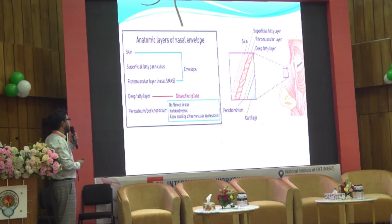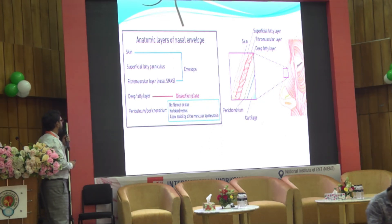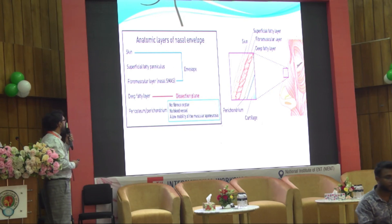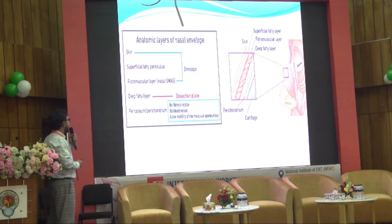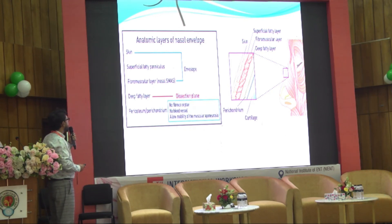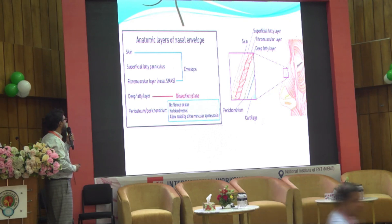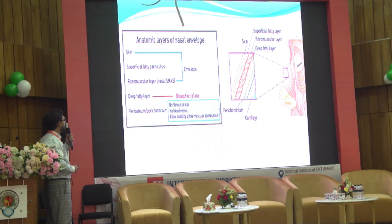There is the SMAS layer, deep fatty layer, and perichondrium and periosteum layer. Our usual dissection plane is the supraperichondrial or supraperiosteum layer, where there is a deep fatty layer.